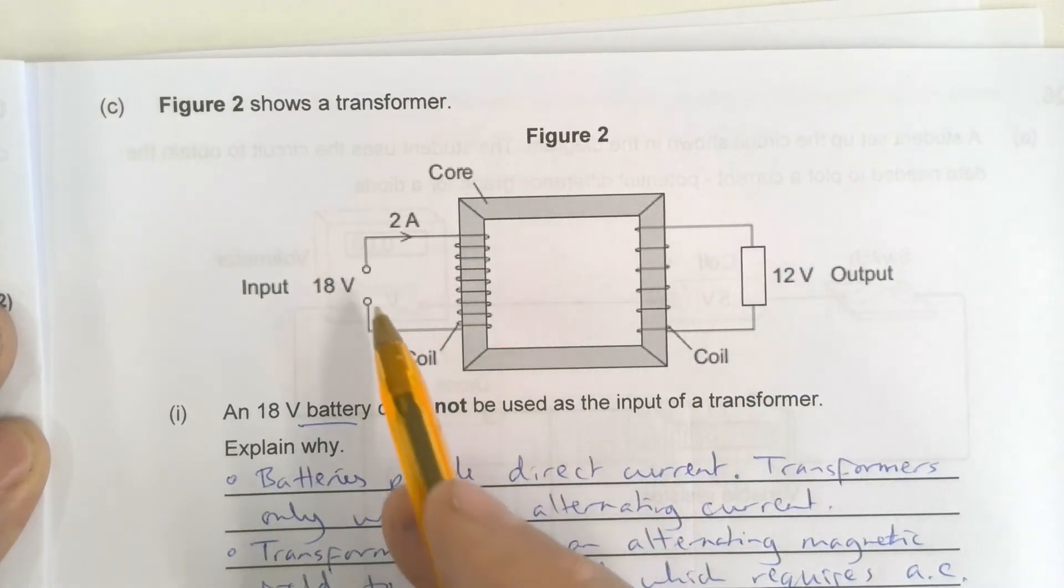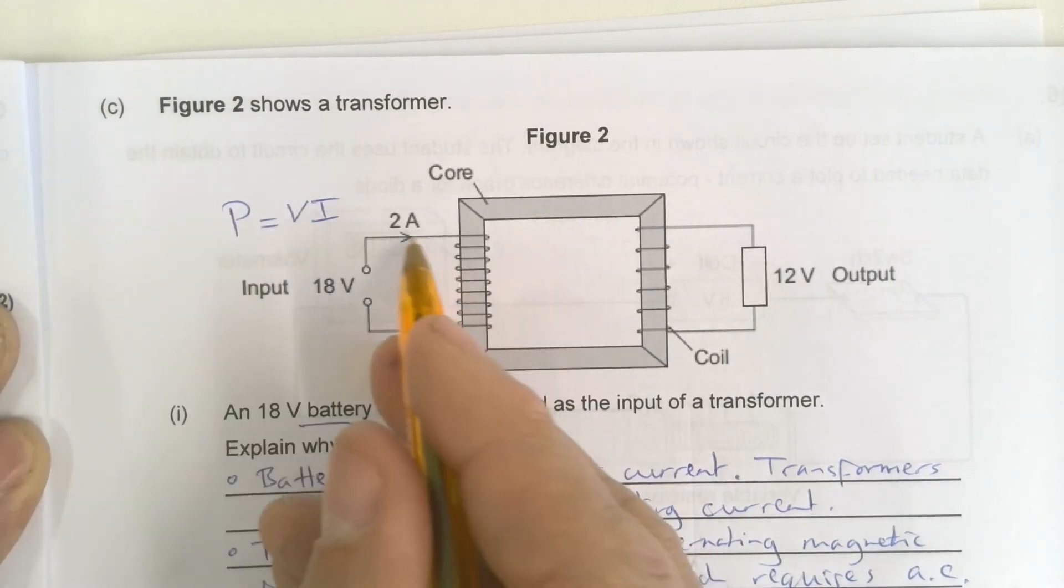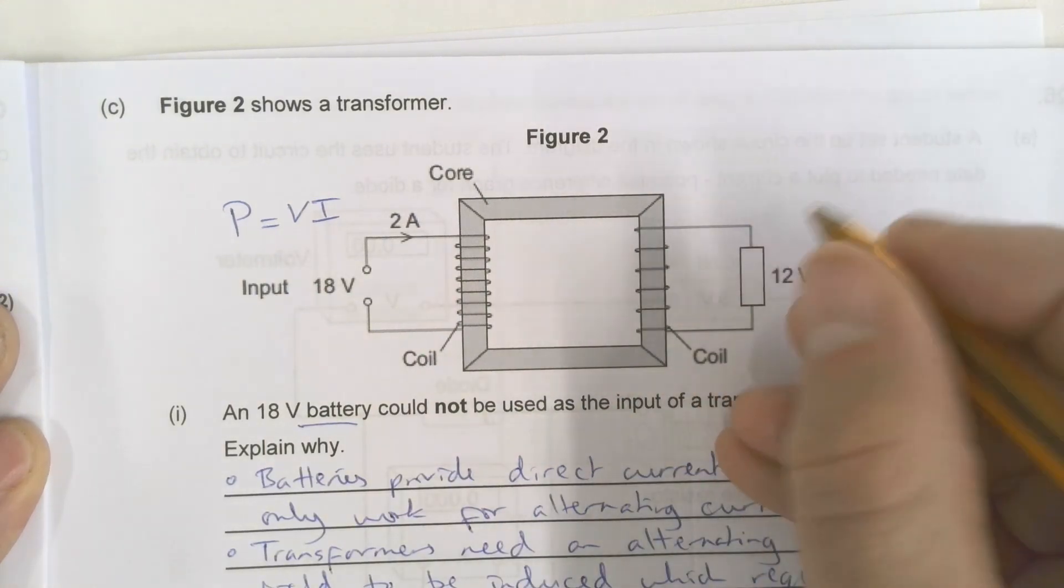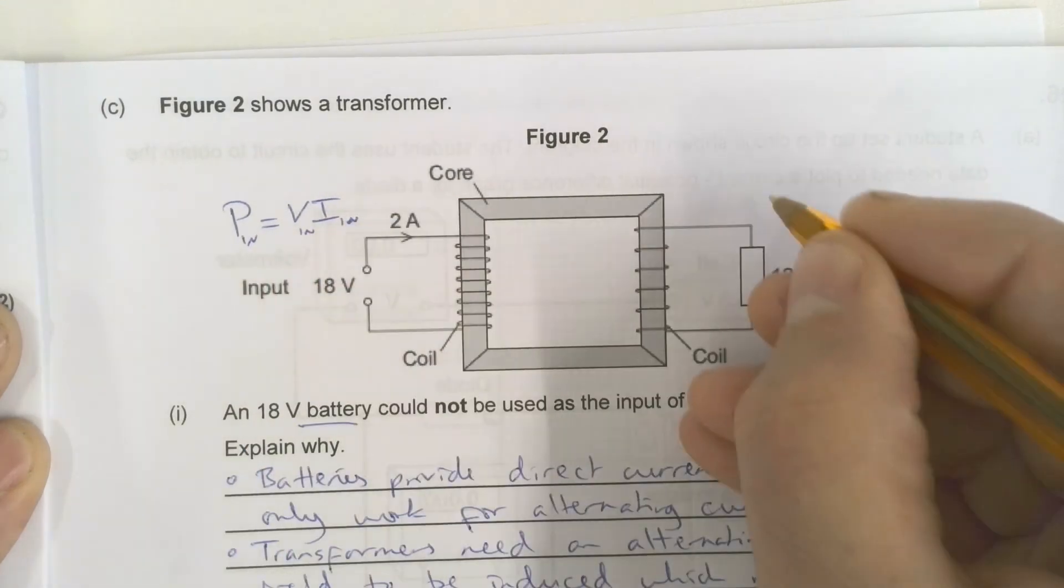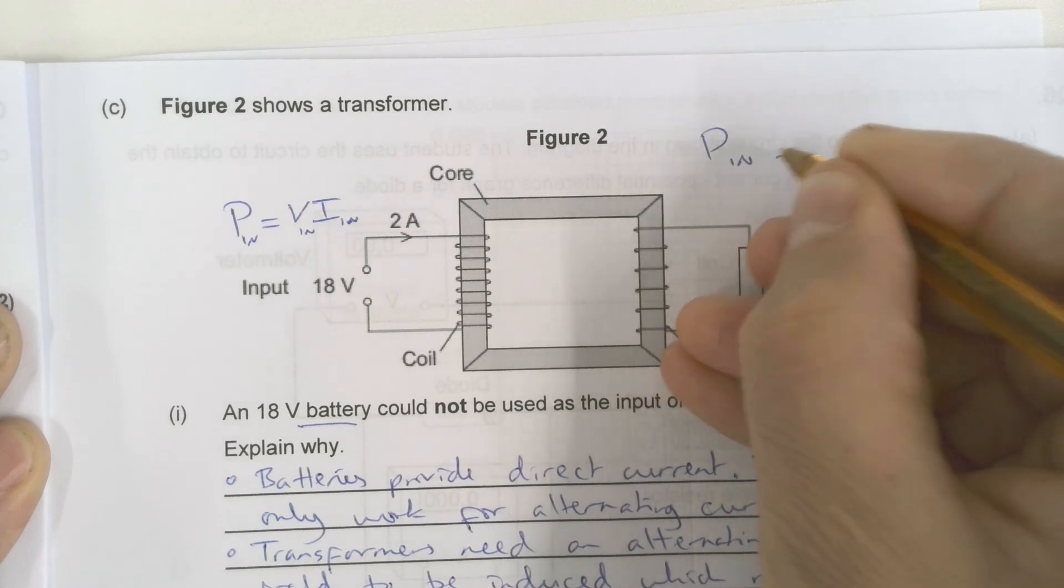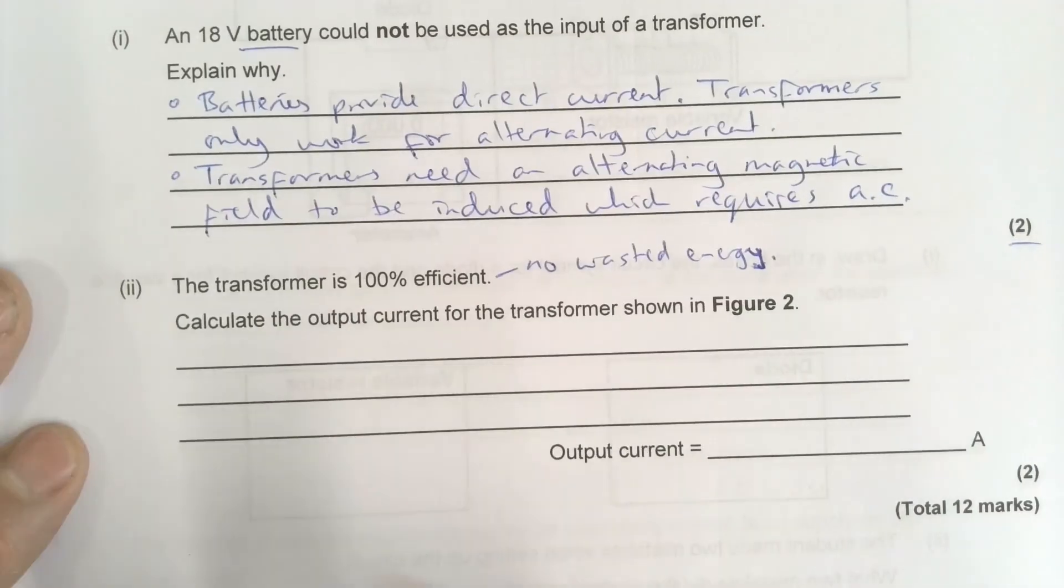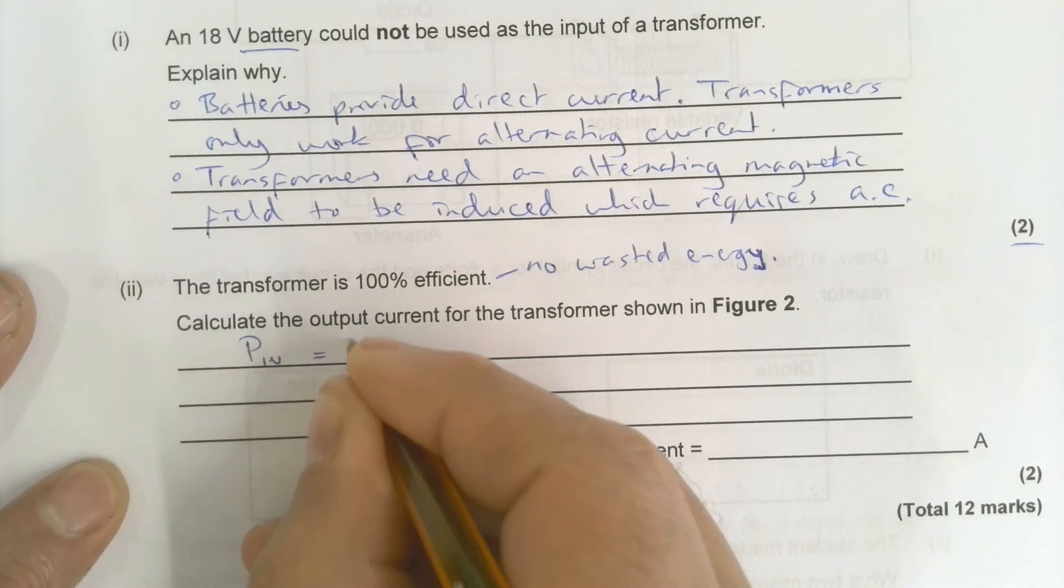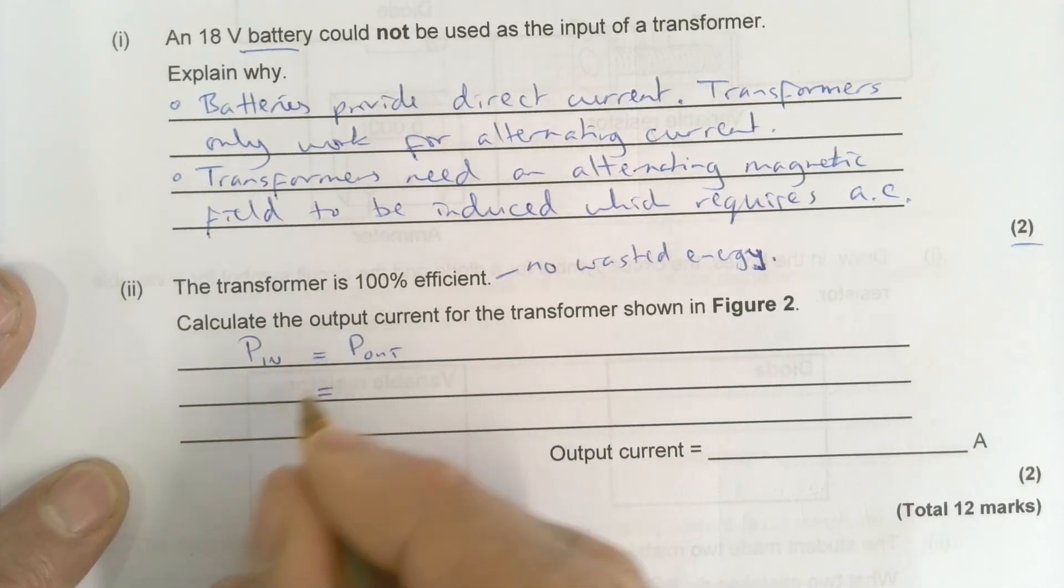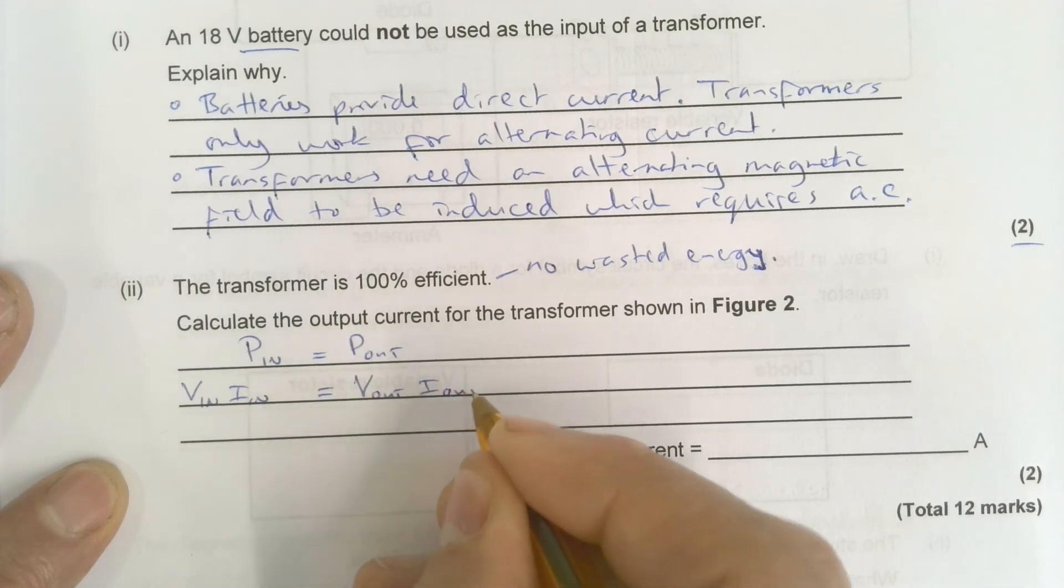Okay, so that means the energy in equals the energy out. So I know from this I've got power equals V I, so power in must equal power out. So power in, potential difference in current in, and I know power in must equal power out if there's no energy lost at all. So from that I know that power in equals power out.